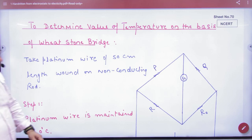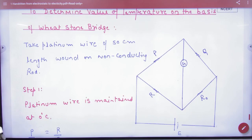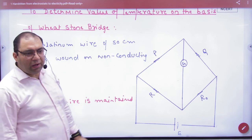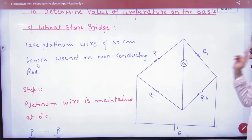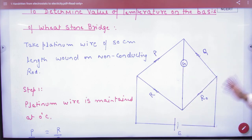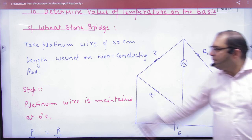To find the value of temperature using the Wheatstone Bridge, you have to set up the bridge with resistances P, Q, R, and R-naught. Now, we want to measure the temperature. For this purpose, you have to take a particular wire — this wire is made of platinum.